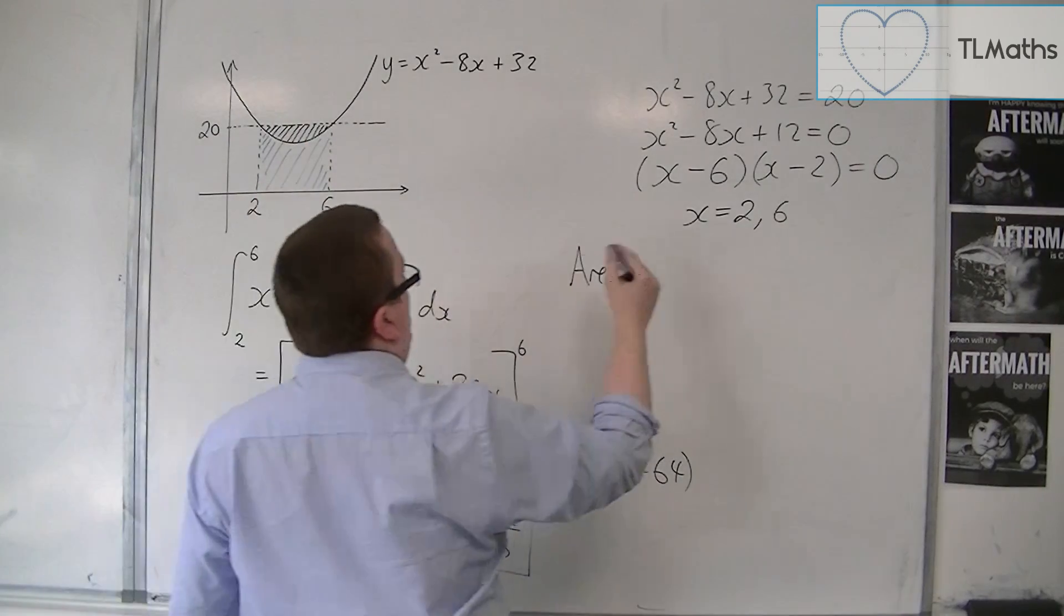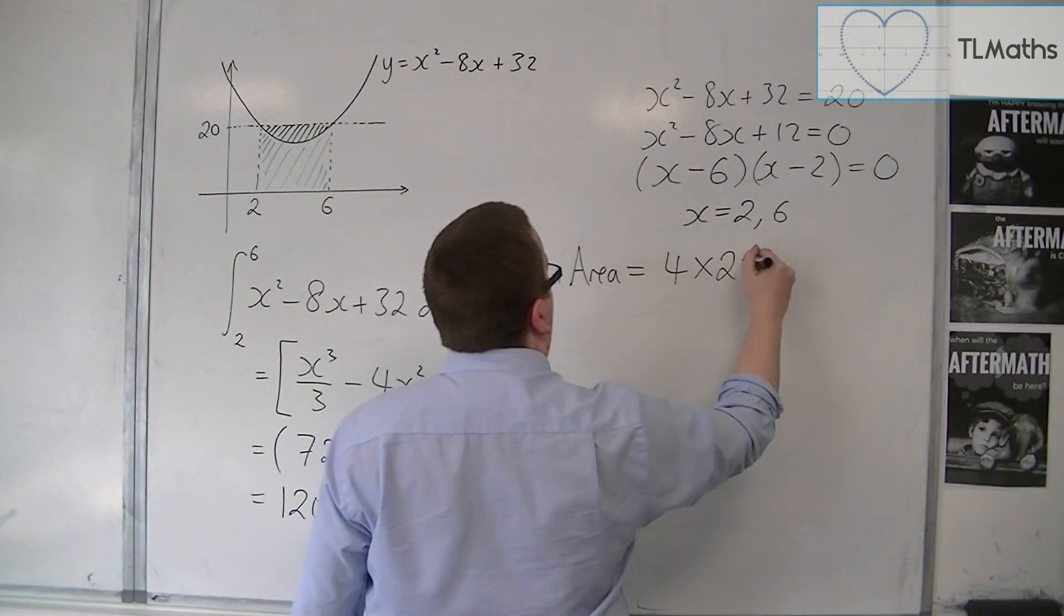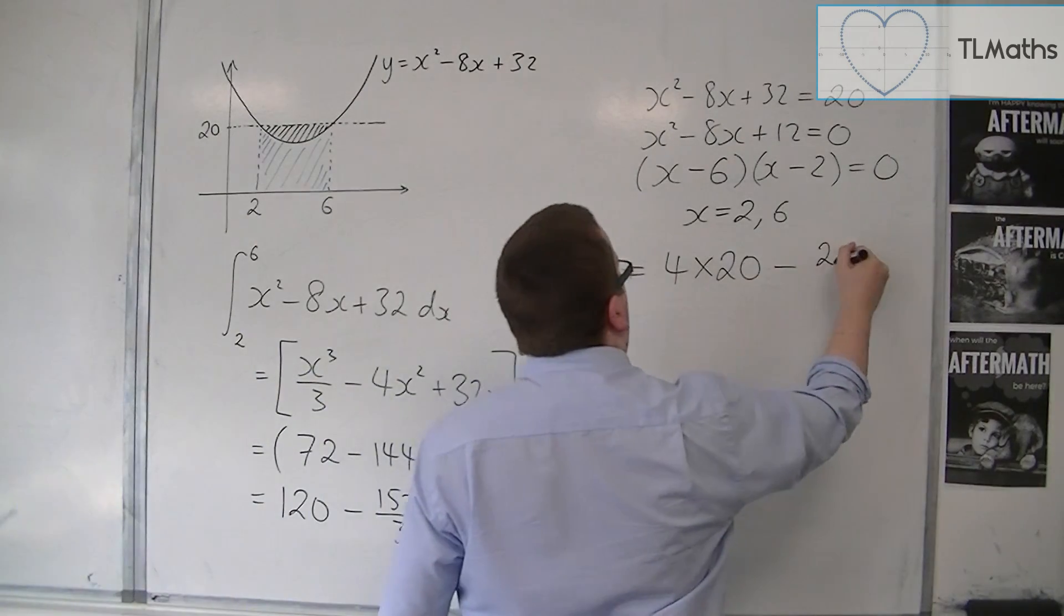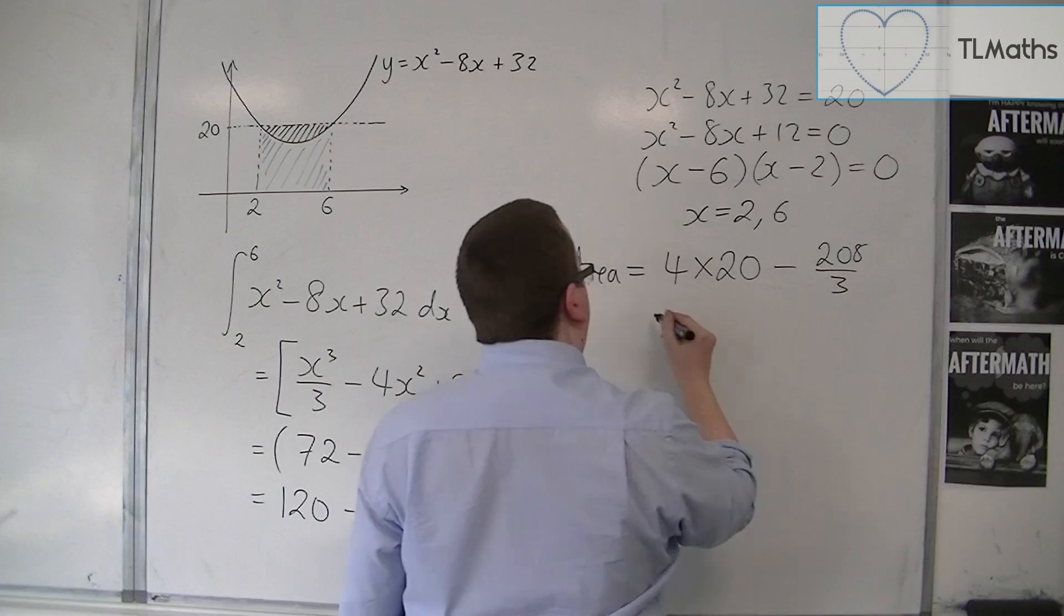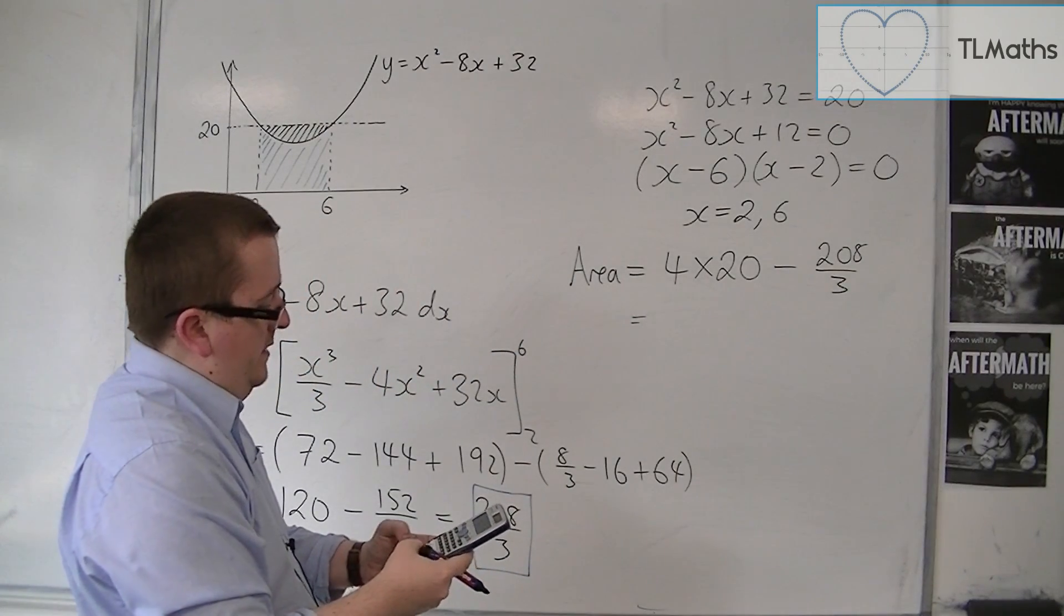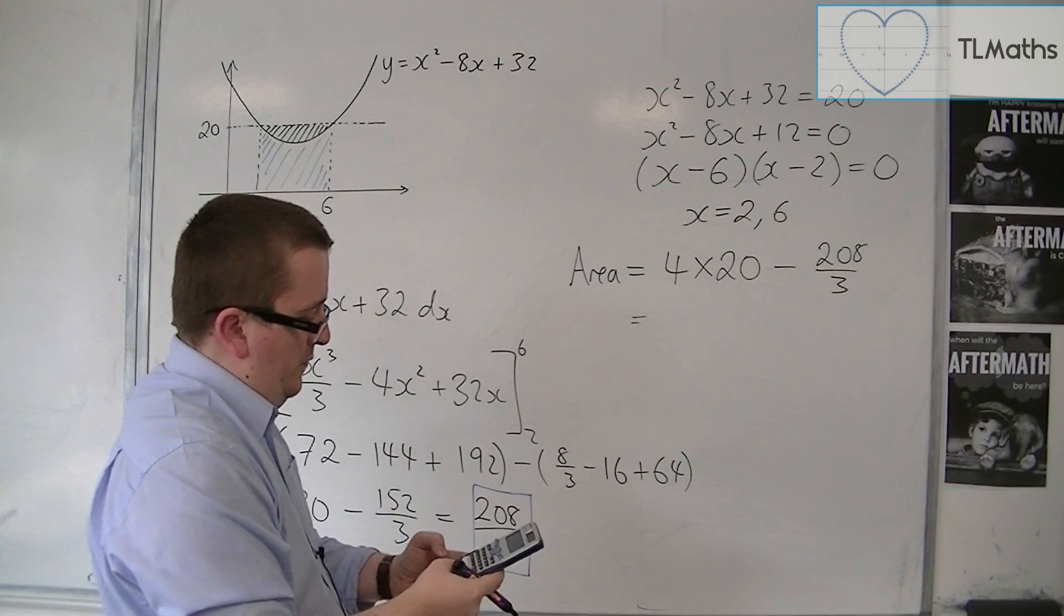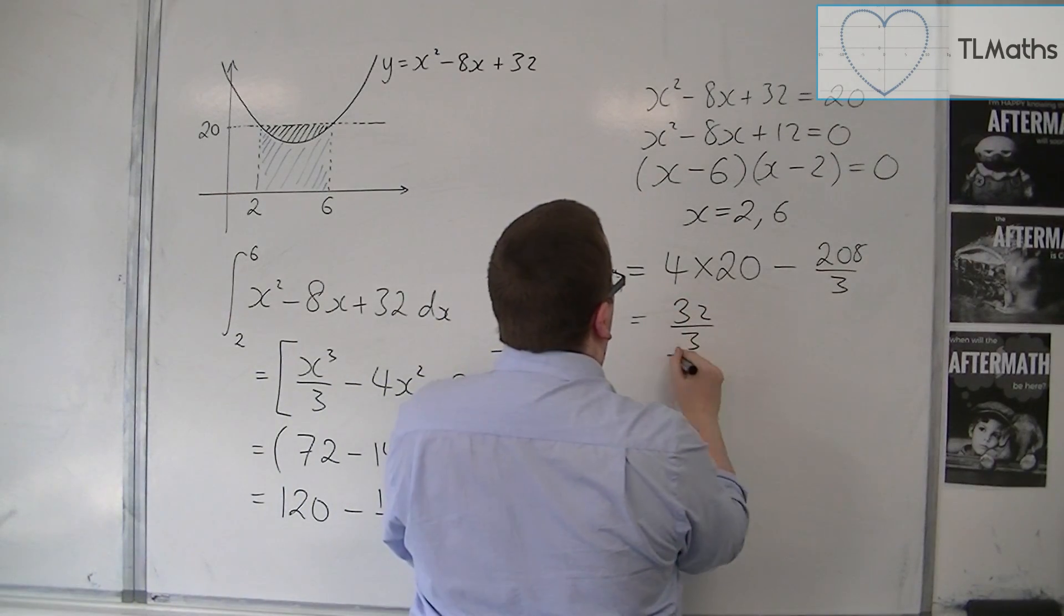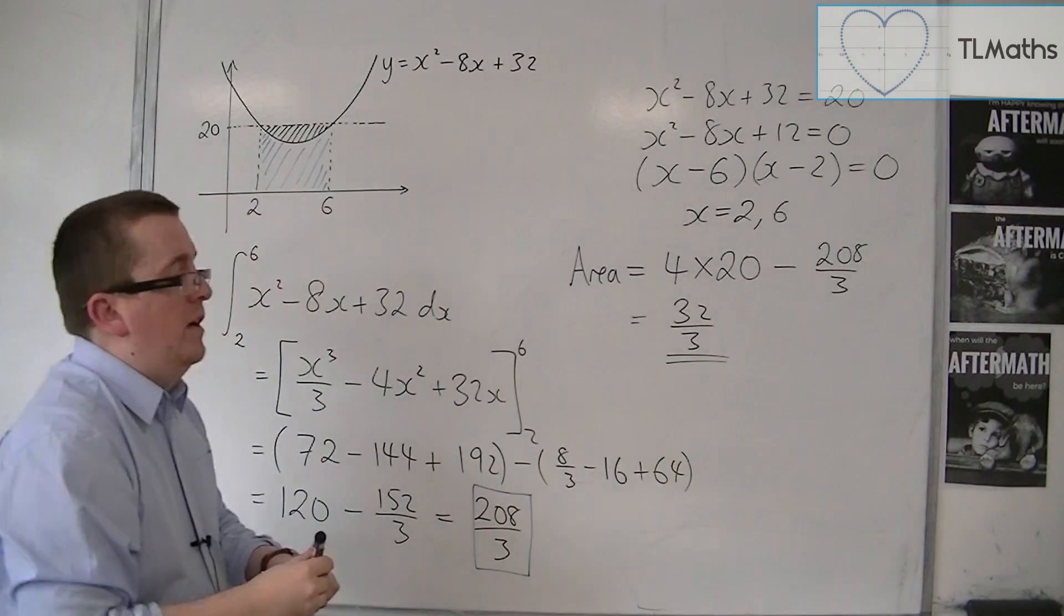So the area that I want is the area of the rectangle, which is 4 times 20. So 4 by 20. Take away the blue area, so 208 over 3. So 4 times 20, take away 208 over 3, gets me 32 over 3. So that is the area that I'm looking for.